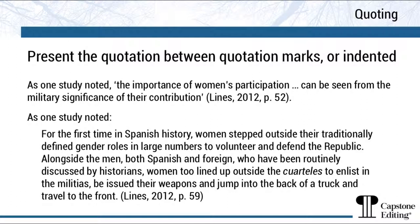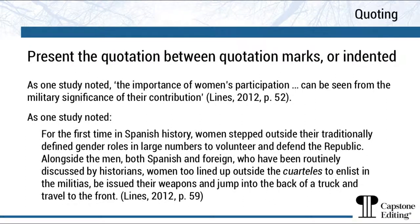However, you'll see that for both citations a page number has been provided, so it's important to know what to do when a source doesn't have page numbers. In this case, any location information that is available to you should be used. For example, if you're citing a web page, provide the paragraph number or section heading. If you're citing a transcript, give the line number. This example quotation on this slide comes from a blog article.